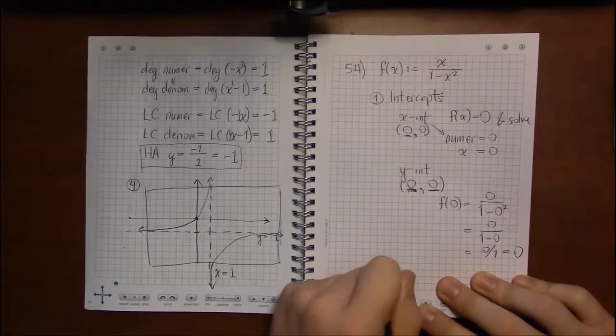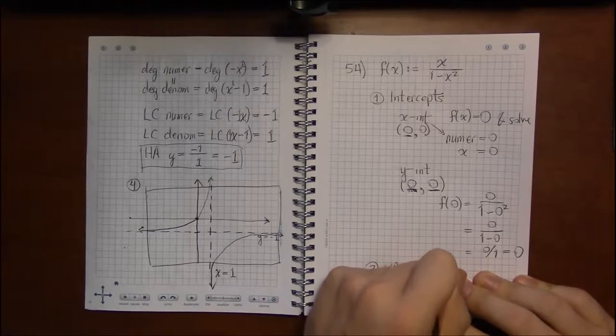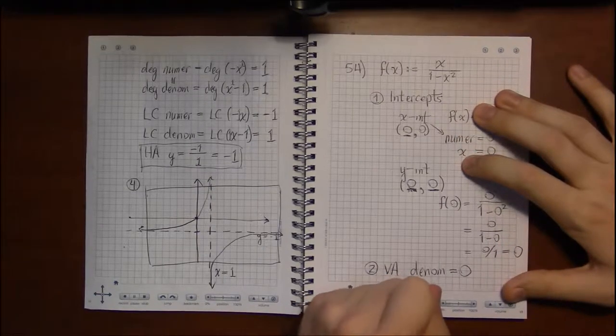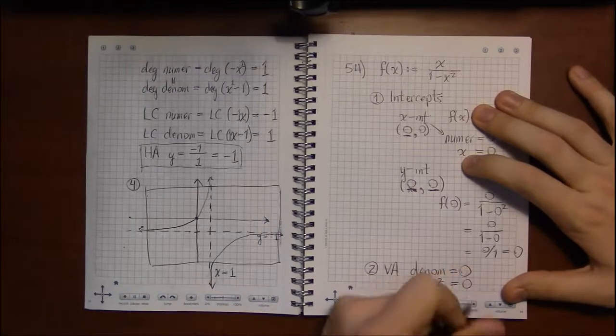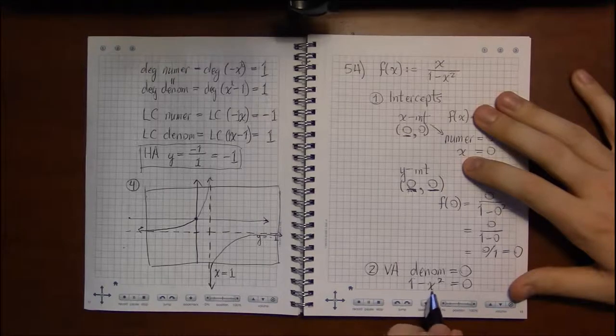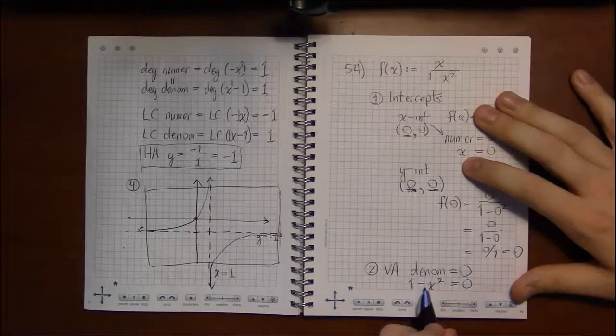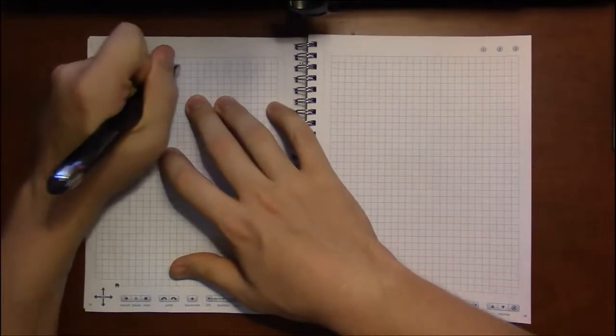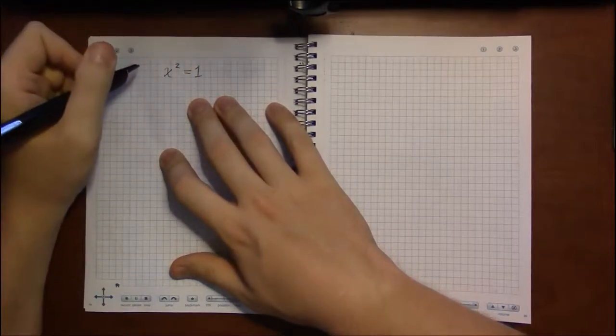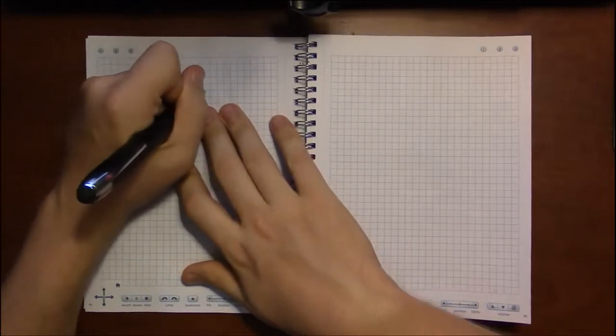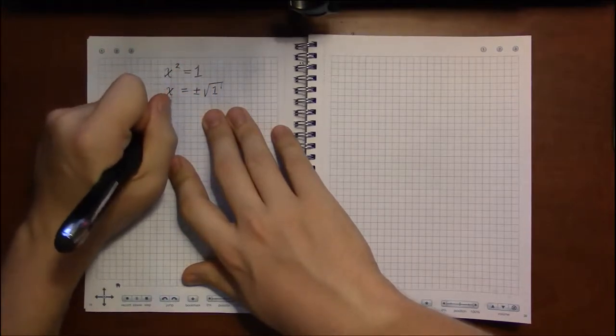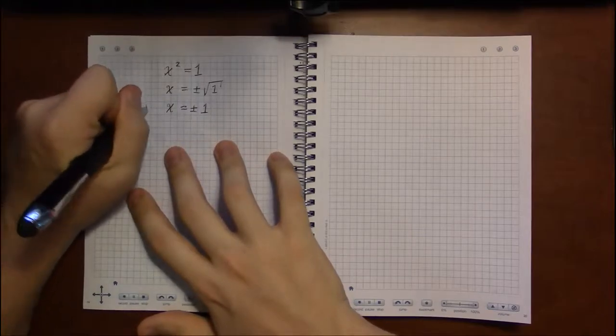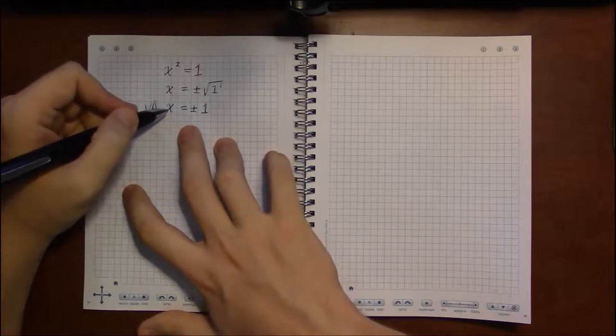So then for the vertical asymptotes, we set the denominator equal to 0. The numerator had its chance looking for x-intercepts. Now we give the denominator a chance to be 0 and see what that gets us. Now you can factor this or use quadratic formula. But since this is a kind of a special quadratic, because I only see x² numbers, I don't see x's by themselves. The only time I see an x is when it's squared. Then what I can do is I can solve for x². That's going to leave me with x² equaling 1. And then I can take square roots of both sides, adding the obligatory plus or minus. And square root of 1 is just 1. So this is plus or minus 1. So I have two vertical asymptotes. I have the vertical asymptote x equals positive 1, and the vertical asymptote x equals -1.